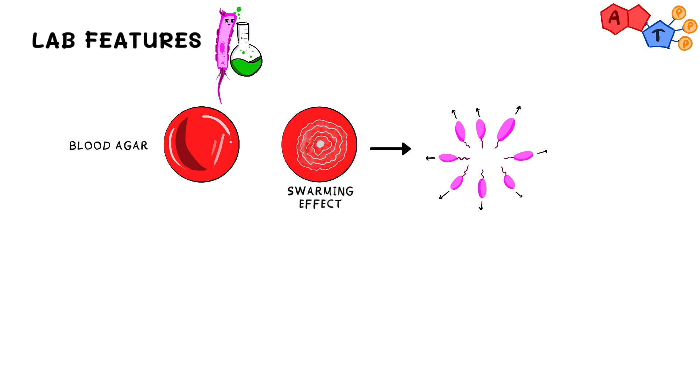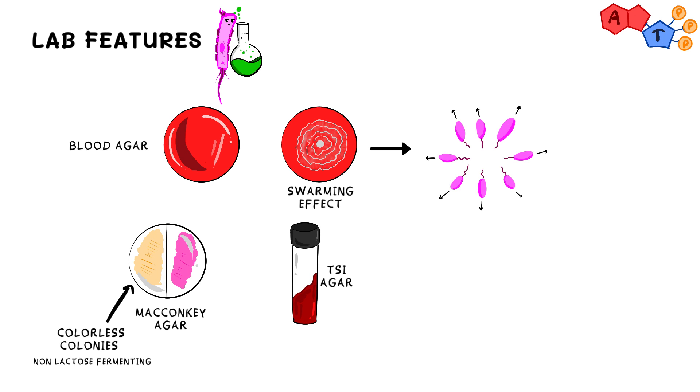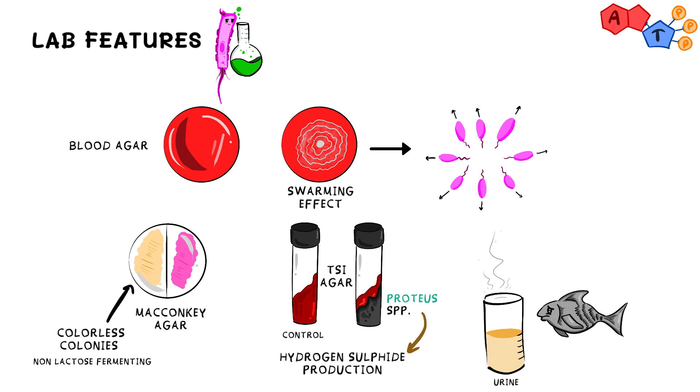In addition to that, Proteus can grow on MacConkey's agar, and since it's a non-lactose fermenting organism, it produces colorless colonies. Furthermore, it can grow on TSI agar as well, as it produces a black color due to its ability to produce hydrogen sulfide. Another thing about Proteus species is that the urine sample that contains the organism often produces a very distinct fishy odor.